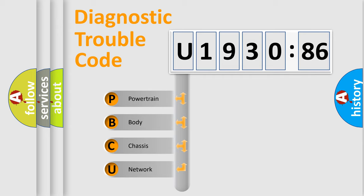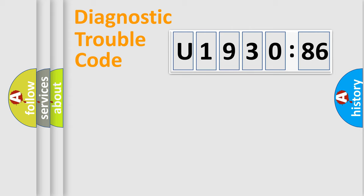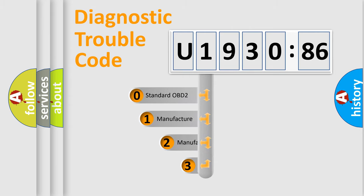We divide the electric system of automobile into four basic units: Powertrain, Body, Chassis, and Network. This distribution is defined in the first character code.